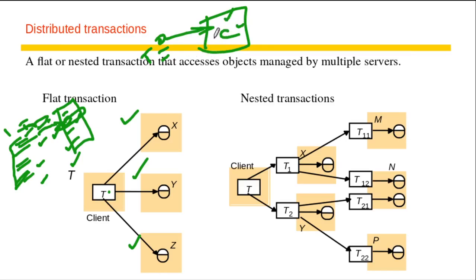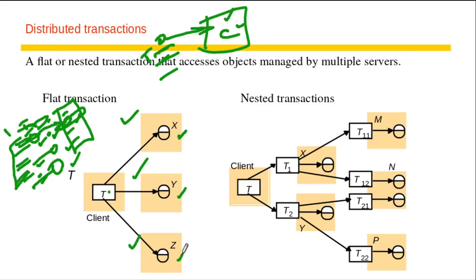Now we are talking about a transaction to be executed on multiple servers in a distributed environment. This means that certain operations involve data objects which are on server X, while other data objects involved in some operations are at server Z. In a distributed transaction, the transaction may involve operations on data objects which are at different servers — not on a single server.